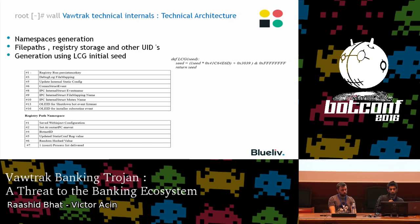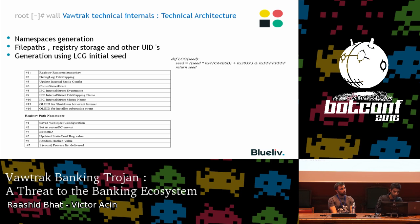Vawtrak also has a namespace generation system for storage. For files and registry storage, it generates a unique namespace using the same LCG algorithm. To identify a particular namespace, a seed is pushed to the algorithm. For example, to save the webinject configuration, it generates a namespace of one, as visible in the picture. That namespace is generated and the webinject configuration is saved in that particular namespace registry.